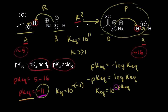If you wanted a faster way to figure out which direction the equilibrium lies, just look at your pKa values. On the left it's 5 and on the right it's 16. The equilibrium lies to the side with the higher pKa value — in other words, the equilibrium favors the weaker acid.